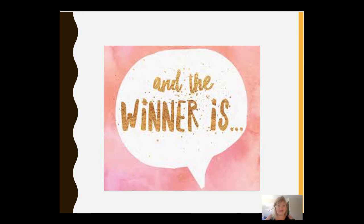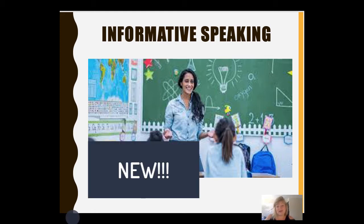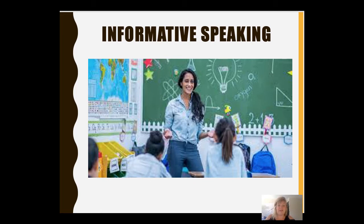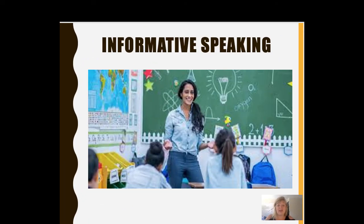If all communication is inherently persuasive, such that we most often take people's word at face value, how then can we give an informative speech that avoids the persuasive elements we have to save for our next speech? One of the first things to remember is that informative speaking should function sort of like a classroom lecture, whereby you share new information with your audience. Your goal is to simply share the information in a creative, engaging, dynamic, meaningful way, but to avoid telling them what they should do or think about the topic presented.